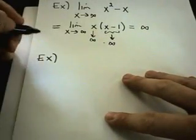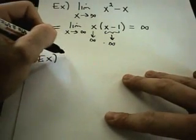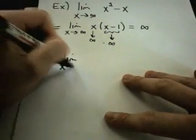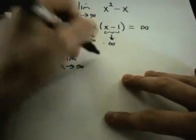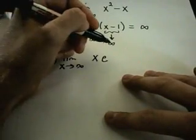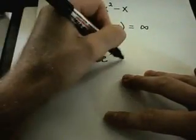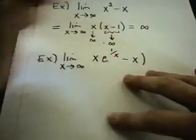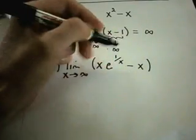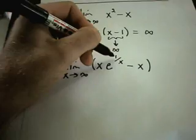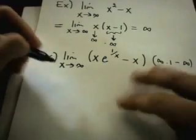Let's do another one — maybe one that's not so easy. Suppose we have the limit as x goes to infinity of x times e to the 1 over x minus x. In this case, certainly the x's are going to infinity, the 1 over x is going to 0 as x goes to infinity, so really this is like having infinity times 1 minus infinity — again you have the indeterminate form infinity minus infinity.